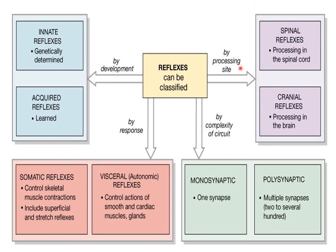Based on processing — meaning where the center in the reflex arc processes the information — if it is in the spinal cord, those are spinal reflexes. If the process occurs in the brain, those are cranial reflexes. Based on the response, it may be somatic or visceral. Visceral reflexes concern the response in smooth muscle, cardiac muscle, and glands. Somatic reflex is a response in skeletal muscle. Smooth muscle covers intestines, blood vessels, urinary bladder, uterus.